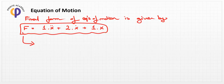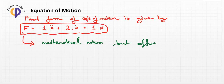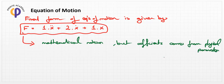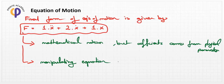How can we use this formula efficiently? You should notice that the whole equation is in mathematical notation, but the coefficients come from physical parameters — such as material properties, shape determination, or 3D size. If we use this equation, we can easily manipulate it using well-known mathematical methods.